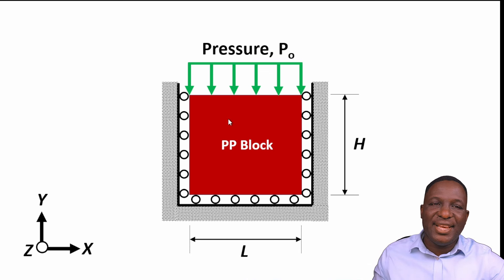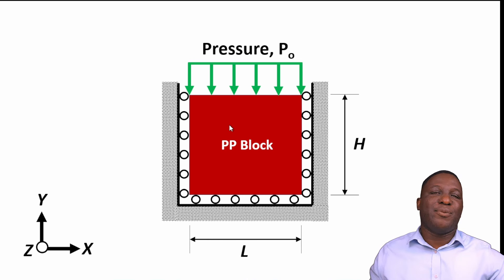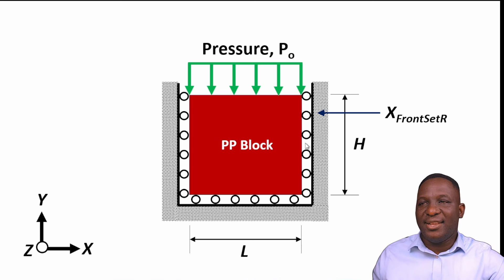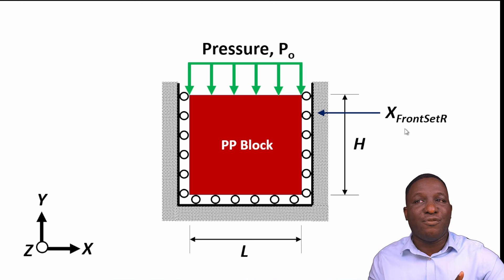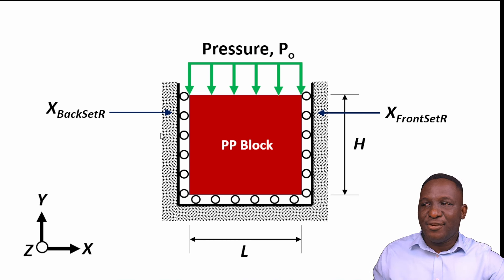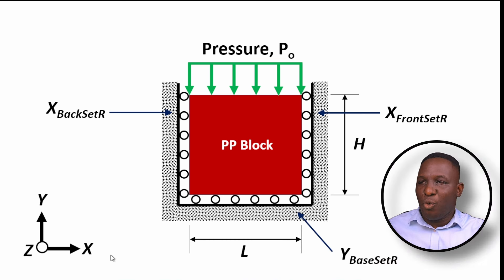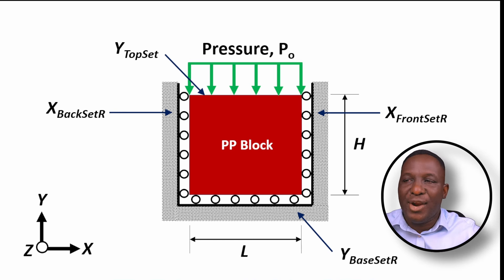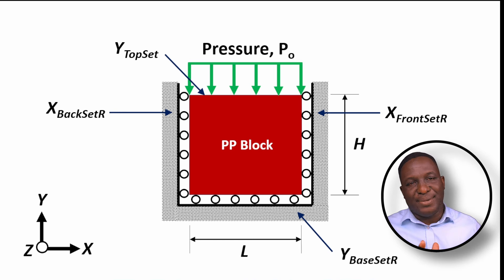We want to see how this block behaves under this loading and what kind of response we extract — that response will allow us to determine the bulk modulus. The left edge is called the X front set roller, with the X front surface boundary condition. The opposite is the X back surface. In the Y axis we have the Y base, with a roller support, and the Y top will have a pressure load applied to it.